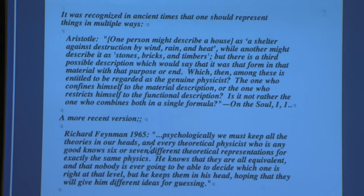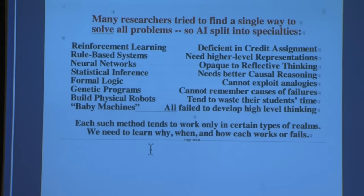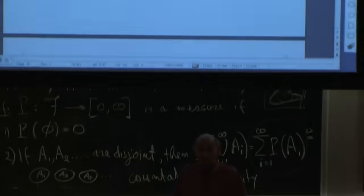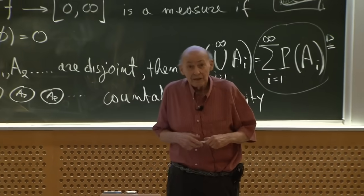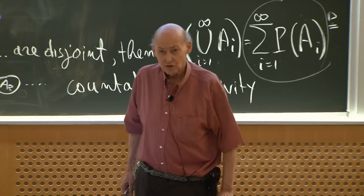I found a paragraph by Feynman who says every theoretical physicist who is any good knows six or seven different ways to represent exactly the same physics. You know they're all equivalent, but you keep them all in your head, hoping they will give you different ideas for guessing. The interesting thing about people is that they have so many ways to do things, perceive things, and think of things. In some cases we even know that different parts of the brain are involved in constructing those different representations.